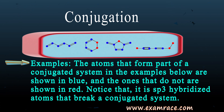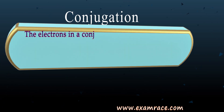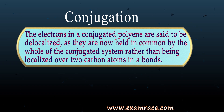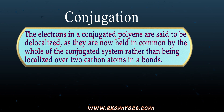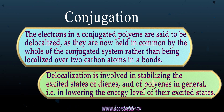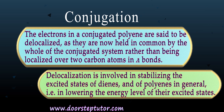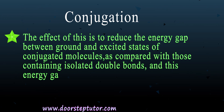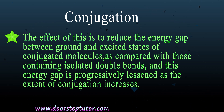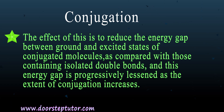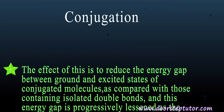The electrons in a conjugated polyene are said to be delocalized because they are held in common by the whole conjugated system rather than being confined over two carbon atoms in pi bonds. Delocalization stabilizes the excited states of dienes and polyenes by lowering their energy levels. This reduces the energy gap between the ground state and the excited state of conjugated molecules compared with those containing isolated double bonds.